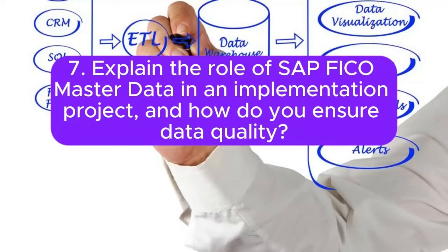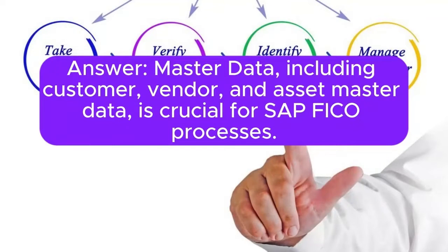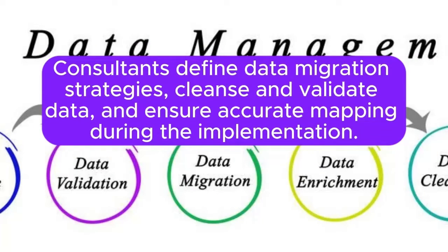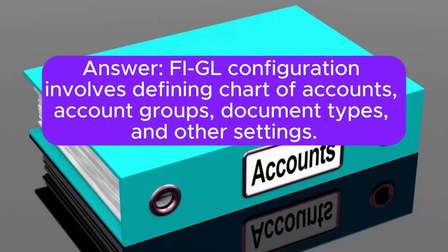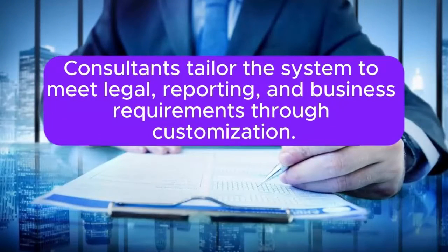Question 7: Explain the role of SAP FICO master data in an implementation project and how do you ensure data quality? Master data, including customer, vendor, and asset master data, is crucial for SAP FICO processes. Consultants define data migration strategies, cleanse and validate data, and ensure accurate mapping during the implementation. Question 8: How do you approach the configuration of SAP FICO General Ledger (FI-GL) in an implementation project? FI-GL configuration involves defining chart of accounts, account groups, document types, and other settings. Consultants tailor the system to meet legal, reporting, and business requirements through customization.